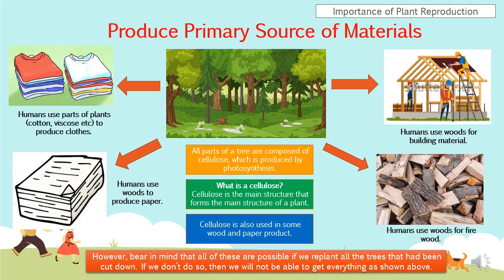The next importance of plant reproduction is to produce primary source of materials. In this case, we are talking about plants. So plants provide primary source of materials in producing something. Do you know that we can get a lot of things just from a tree itself? All parts of a tree are composed of cellulose, which is produced by photosynthesis. Cellulose forms the main structure of a plant, and it is also used in some wood and paper products. Cellulose also helps keep the shape of the plant.